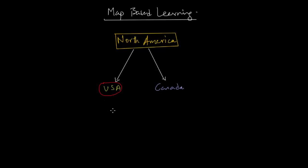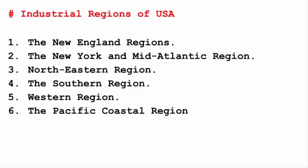USA is such a massive nation, so to better understand it, the industrial units have been broadly divided into regions — and there are six regions. Let's quickly locate each one of them.